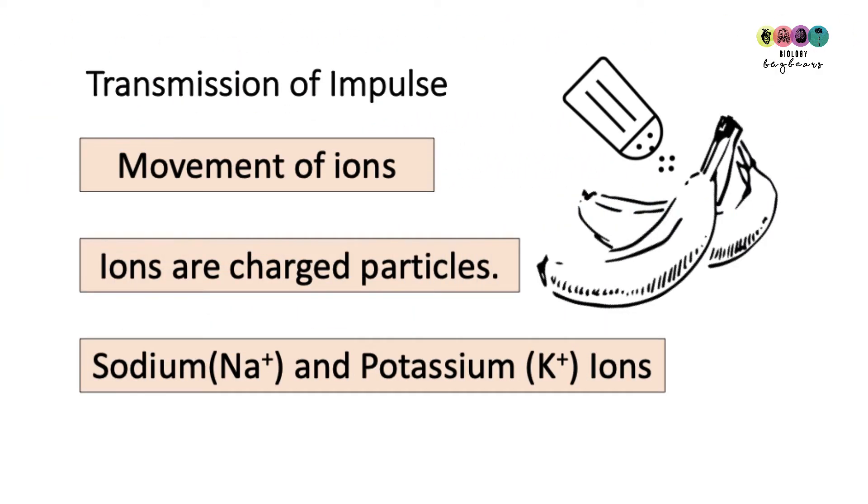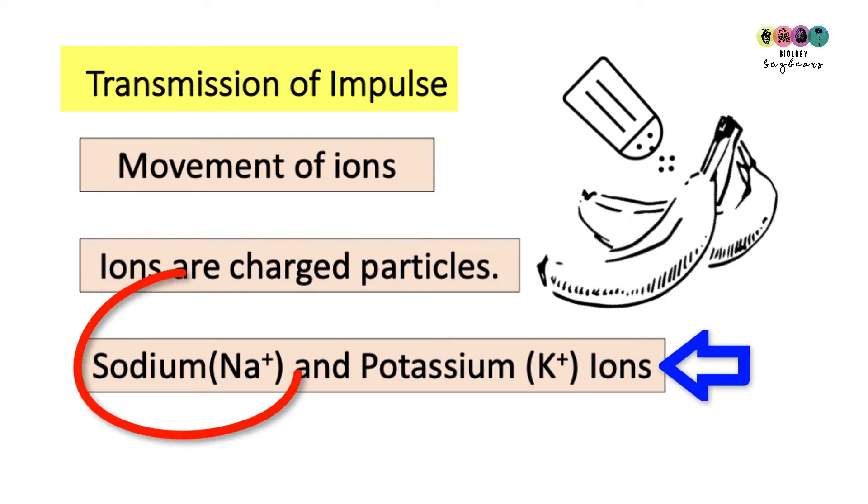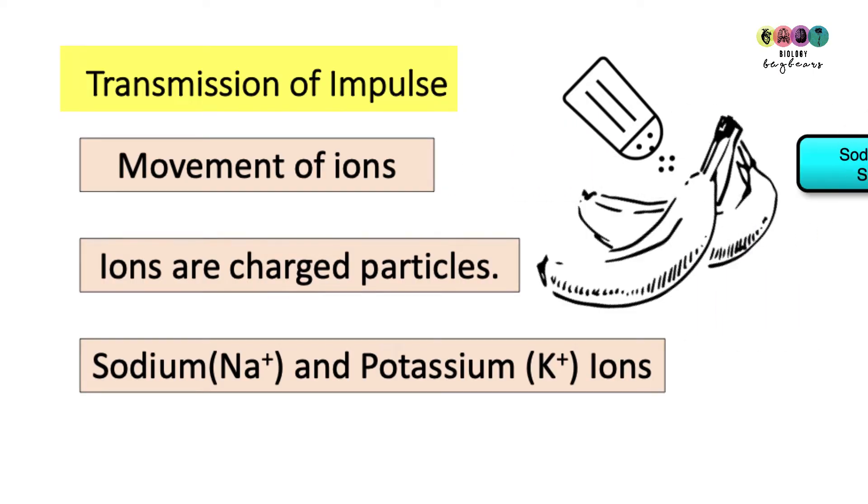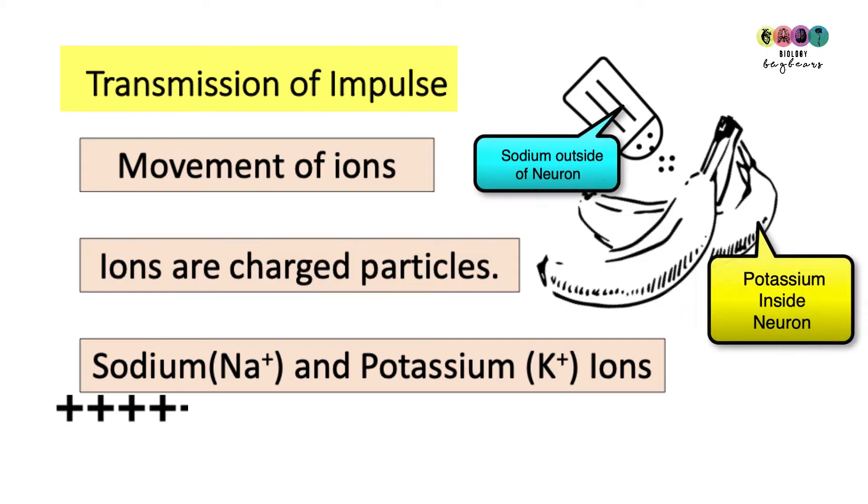Next is the transmission of the impulse. The big thing is be able to state it involves the movement of ions, and just know that ions are charged particles. You don't have to know the particular ions, but it's sodium Na+ and potassium K+ ions, and it's really the sodium ions that do most of the moving. The salt and banana are there to remember sodium in salt and potassium in bananas. Sodium ions are always on the outside of a neuron and potassium ions are usually on the inside.